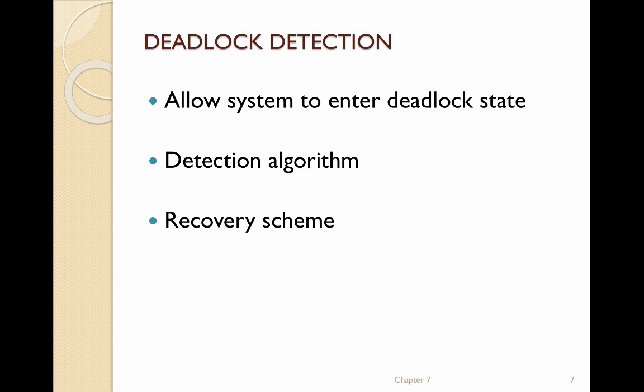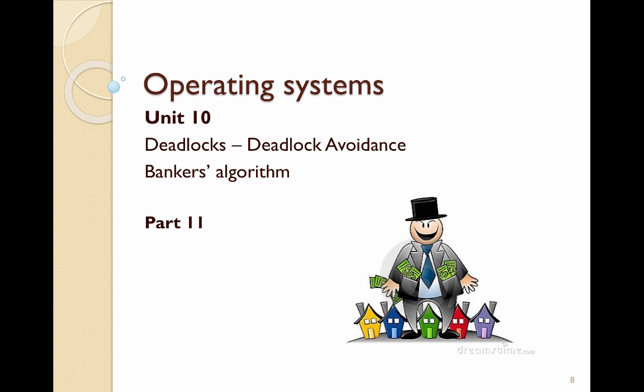The last part of deadlock handling is detecting and recovering. In a system, you could either ignore deadlocks, prevent or avoid them, or allow the system to enter a deadlock state and then use an algorithm to detect that a deadlock has occurred and recover from it. That concludes unit 10 part 2.